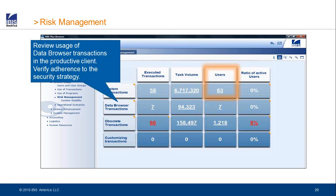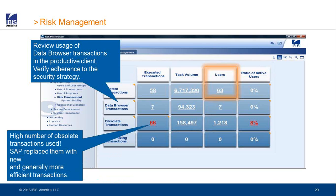If we go back to the more technical content, here we analyze some risk factors in your system. In this case, there are many users who are using system transactions. There are also users who are using data browser transactions. We have obsolete transactions which are no longer really supported by SAP, or where there are better and newer transactions available. If there are many users using those system transactions, they are pretty critical and affect the entire system — we should make sure that only a few hand-picked users should have the authorization to run those system transactions.